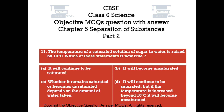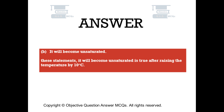Question number 11. The temperature of a saturated solution of sugar in water is raised by 10 degrees Celsius. Which of these statements is now true? Option A, It will continue to be saturated. Option B, It will become unsaturated. Option C, Whether it remains saturated or becomes unsaturated depends on the amount of water taken. Option D, It will continue to be saturated, but if the temperature is increased beyond 10 degrees Celsius it will become unsaturated. The right answer is Option B — It will become unsaturated. This statement is true after raising the temperature by 10 degrees Celsius.